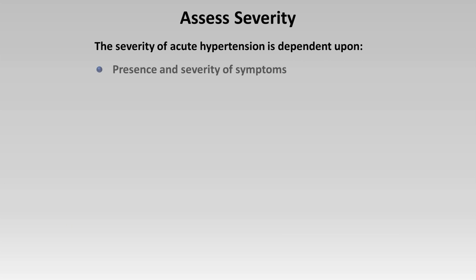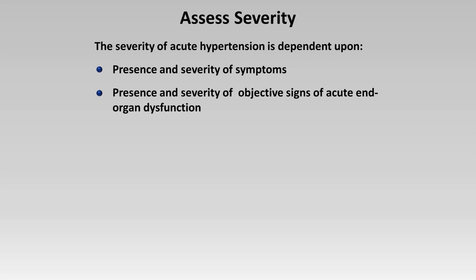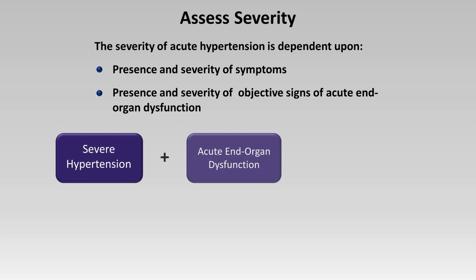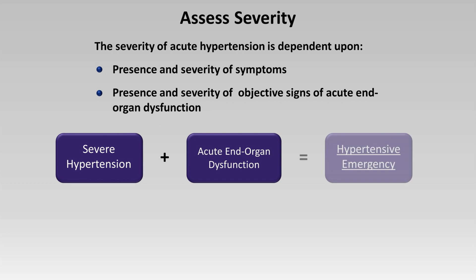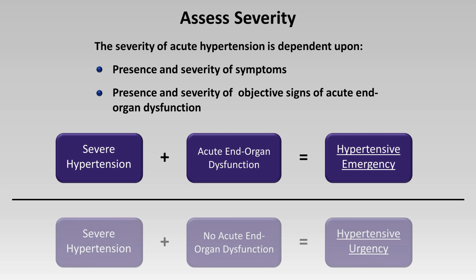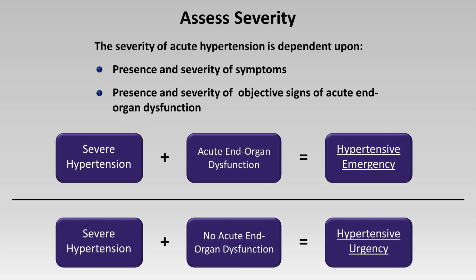When assessing the severity of acute hypertension, it depends on the presence and severity of symptoms as well as objective signs of acute end-organ dysfunction. When severe hypertension is associated with secondary acute end-organ dysfunction, the situation is called hypertensive emergency. When severe hypertension is not associated with acute end-organ dysfunction, this is called hypertensive urgency. The cutoff for severe is arbitrary but most commonly quoted as a systolic pressure of 180 or more, or a diastolic of 110 or more, though urgency depends greatly on the patient's baseline pressure and current comorbidities.